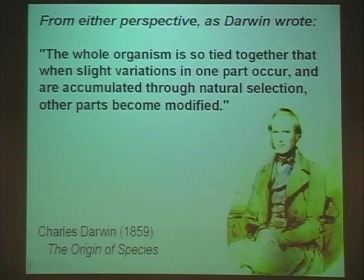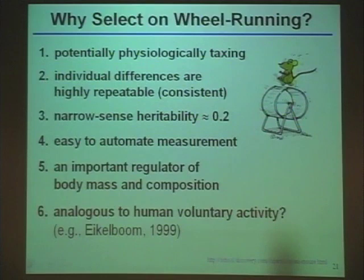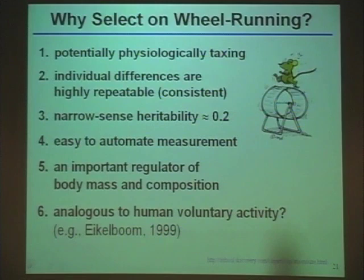From either introductory perspective, as Darwin wrote 150 years ago, the whole organism is so tied together that when slight variations in one part are accumulated through natural selection, other parts become modified. So if you have the evolution of a behavioral trait, how do all the components affecting that trait evolve in a correlated fashion? The specific project I'll describe is a long-term selection experiment now at about 57 generations, selecting for high voluntary wheel-running activity in mice.